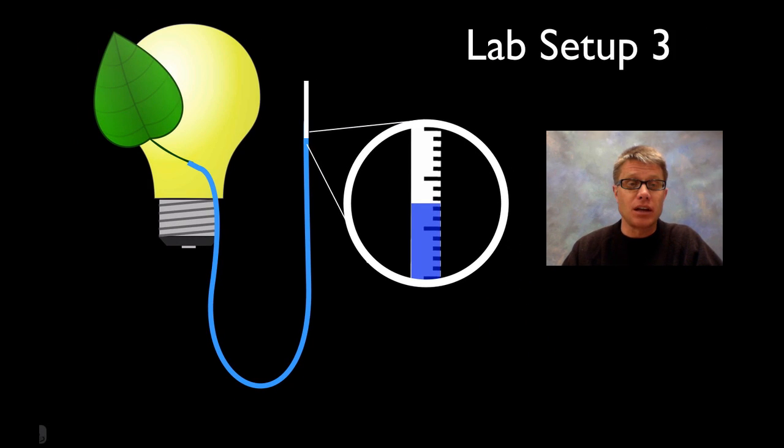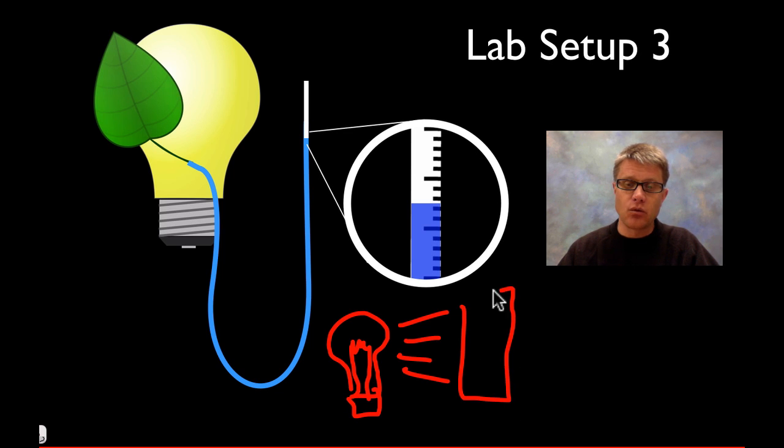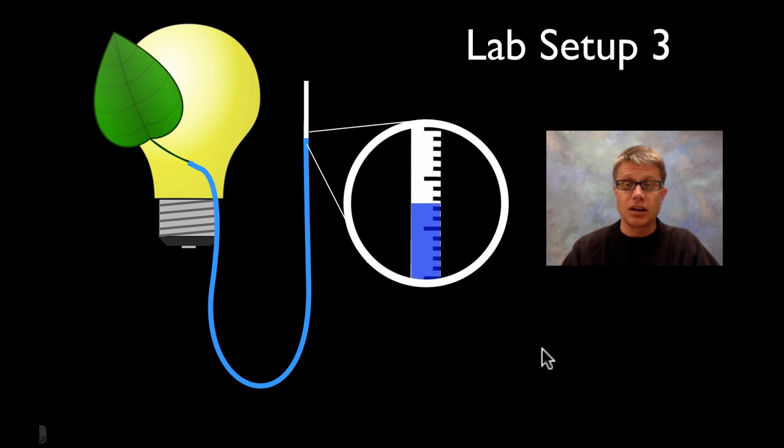Next we have lab setup 3 where we have the leaf in front of a light bulb. One important thing that I'm not showing here that you have to have is that you put the light bulb like this. We'll also put some water and we call that a heat sink because we don't want to measure the temperature and how that affects it. So we'll put a heat sink between the light bulb and then we'll put the leaf over like that, so just the light is moving through.